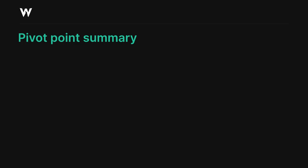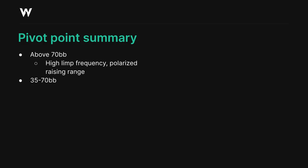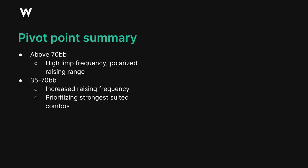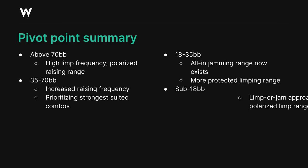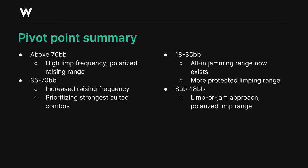So let's summarise the strategic changes we're making at each pivot point. Above 70 big blinds, we're limping a wide range and raising a polarized range at a low frequency. As we go below 70 big blinds and approach 35 big blinds, we're increasing our propensity to raise and prioritising the strongest suited hands when we do so. Once we dip below 35 big blinds, we're likely to start open jamming some hands while protecting our limping range a little more. And finally, once we get below 18 big blinds, we stop raising to a non-all-in size and switch to a limp or jam strategy, with a polarized limping range and a condensed jamming range.